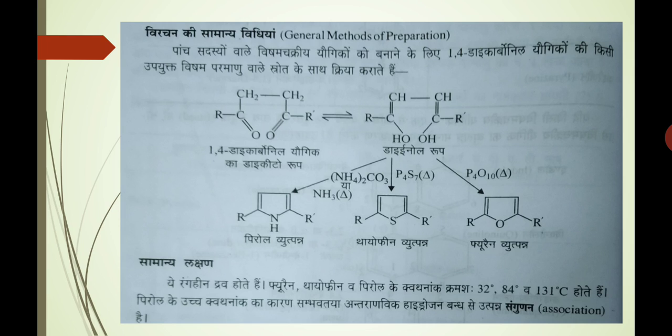Keto aur enol form dono hi ek doosre ke saath equilibrium mein hain. Yadi hum iske reaction ammonium carbonate ya ammonia ke saath heat karein, to nitrogen wale compound ke saath react karwa rahe hain, to humko main product kya hoga — Pyrrole. Iske baad agar hum iske reaction P4S7 ke saath heat karke karwaayein, to ismein sulfur yogic hai, to humko thiophene ka derivative milega. Aur yadi hum P4O10 ke saath heat karwaayein, to oxygen wala reactant liya hai, to humko furan ka derivative milega.